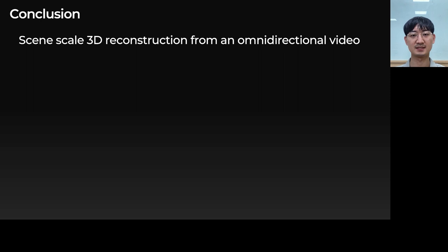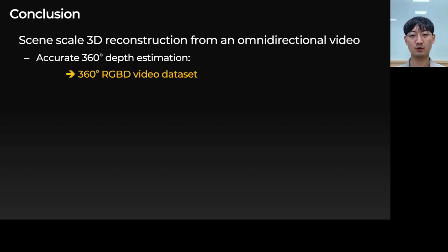In conclusion, we introduced an egocentric scene-scale 3D reconstruction method using a single omnidirectional camera. We created and make available a 360-degree RGBD video dataset and used the dataset for accurate spherical depth estimation. We also presented a spherical binoctree data structure to parameterize the world as a function of distance and efficiently assign voxels to represent the scene. Our method can reconstruct full mesh even from a short camera trajectory by using an adaptive truncation threshold.